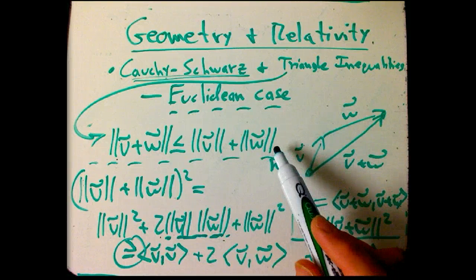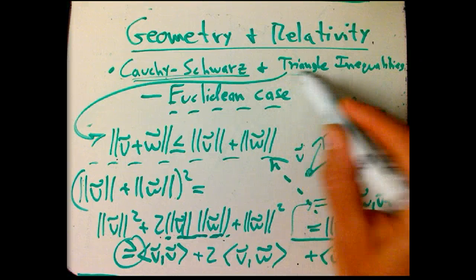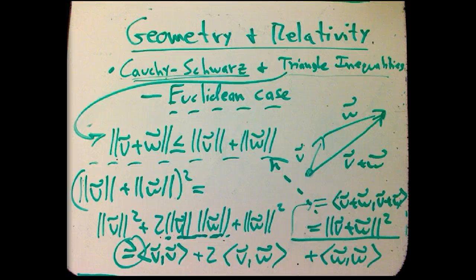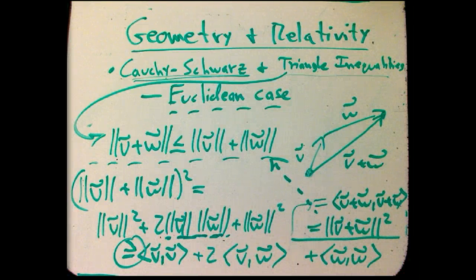So we've recovered some very important fundamental things about Euclidean geometry. Now, in the next video, we're going to see what's the Minkowski analog, and in the video after that, finally, we're going to get some physics in here. I'm going to talk about how this all applies to the real world.